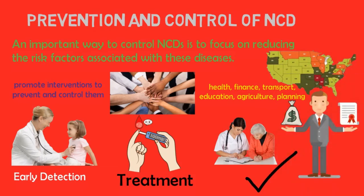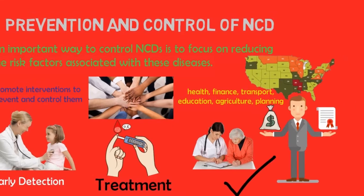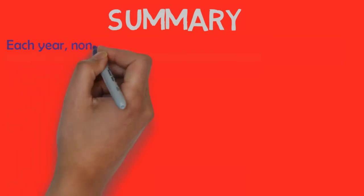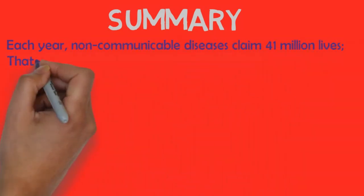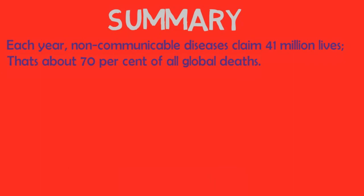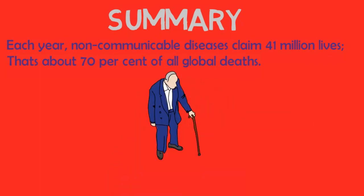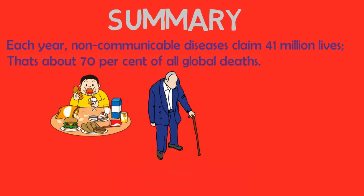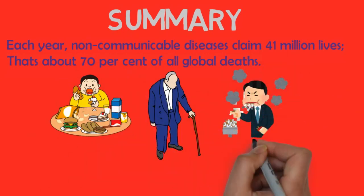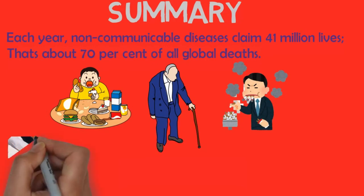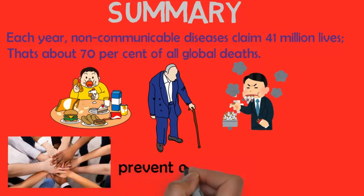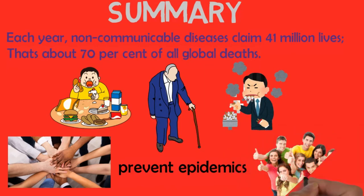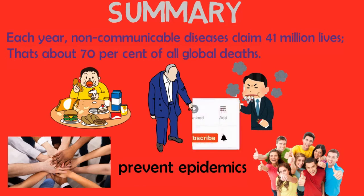Countries with inadequate healthcare coverage are unlikely to provide universal access to essential NCD interventions. In summary, each year non-communicable diseases claim 41 million lives — about 70 percent of all global deaths. While NCDs tend to manifest in adulthood, many have their origins in behaviors adopted during childhood and adolescence. Therefore, greater action is needed from governments, businesses, and communities to prevent them from becoming epidemics. Addressing non-communicable diseases improves individual well-being and advances development.